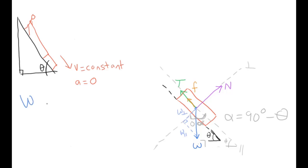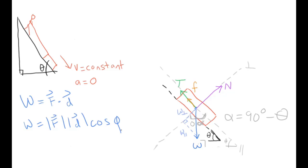According to the definition of work, work is equal to force — a vector — dot product displacement, also a vector, giving a scalar. This formula can also be written as: work equals the absolute value of the force vector times the absolute value of the displacement vector times cosine phi. Phi refers to the angle between the direction of movement of the system and the force being applied. In our problem, for example, the sled is moving down the slope but the force of tension is pulling up the slope, giving us phi equals 180 degrees. The direction of work is accounted for by the cosine phi factor.